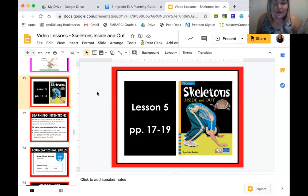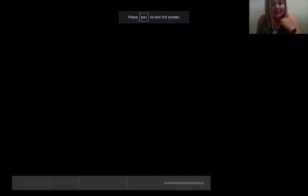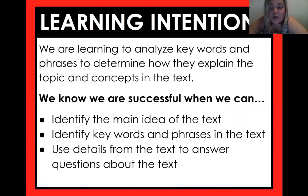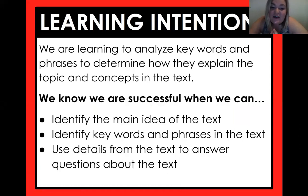Today we are no longer focusing on the human skeleton. We have moved on to learning about different creature skeletons. Our learning intention for today is we are learning to analyze key words and phrases to determine how they explain the topic and concepts in the text — so we're looking at author's word choice. We know we are successful when we can identify the main idea of the text, then identify key words and phrases. The whole reason we identify the main idea is because that will tell us what the key words and phrases are. Then we're going to use details from the text to answer those questions, because we're scholars — we back up our answers with facts.